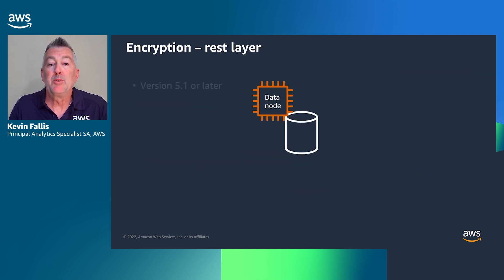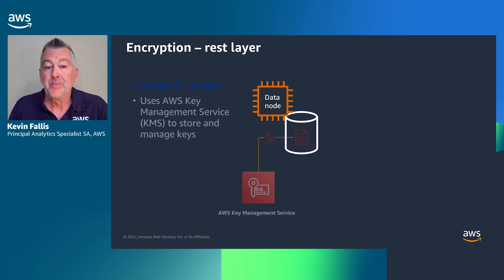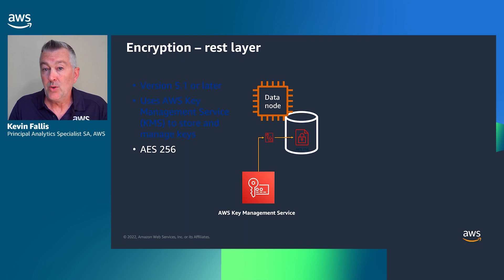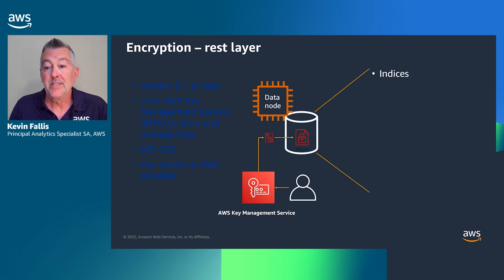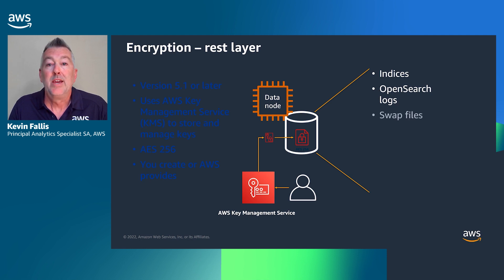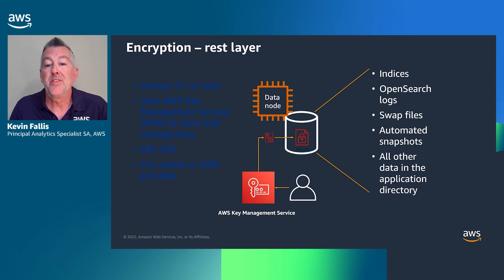From a rest layer perspective, we support encryption at rest, enabled from version 5.1 onwards. It uses the AWS Key Management Service (KMS) to store and manage those keys. It's AES-256 encrypted, and you can either create and bring your own keys or have the Amazon OpenSearch service provide a key for you. What it covers includes the indices, the OpenSearch or Elasticsearch logs, swap files, automated snapshots, and all data in the application directory on the disk that supports the data nodes holding your data.